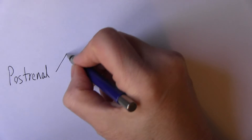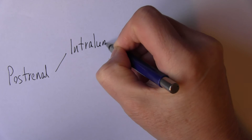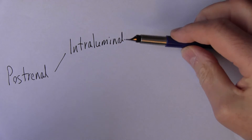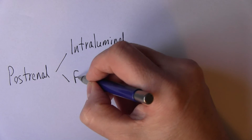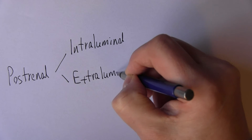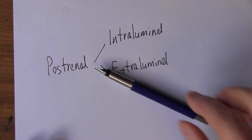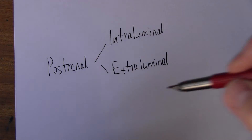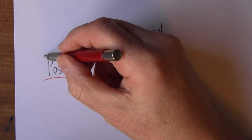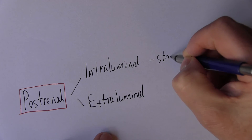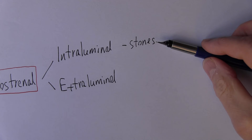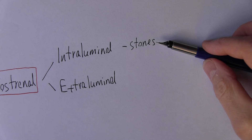We can divide the post-renal into intraluminal — that is, within the lumen of the ureters, the bladder, or the urethra — or it can be extraluminal. Post-renal AKI is always caused by obstruction of the urine after it's been produced. For intraluminal, we can think about stones — calculi — which are typically formed in the calyces and can pass down into the ureters, bladder, and urethra.